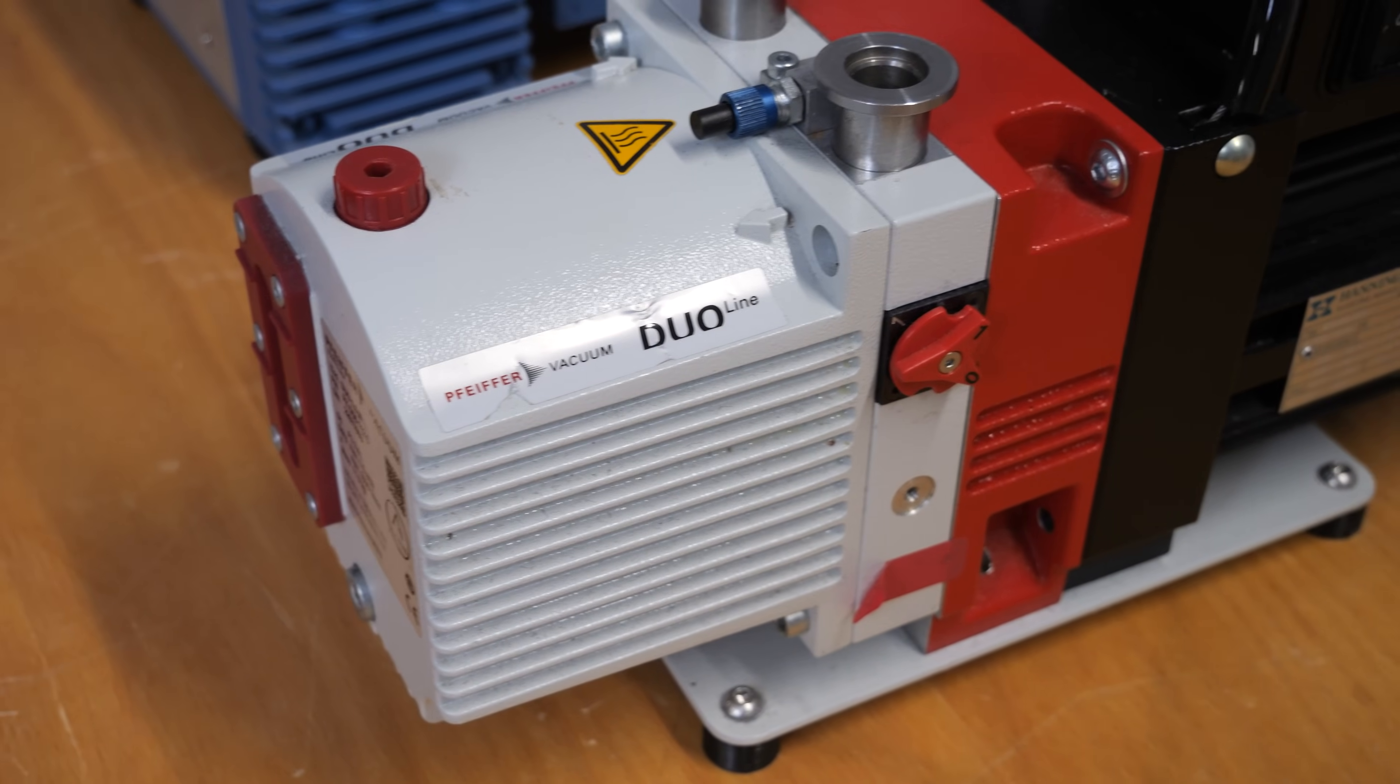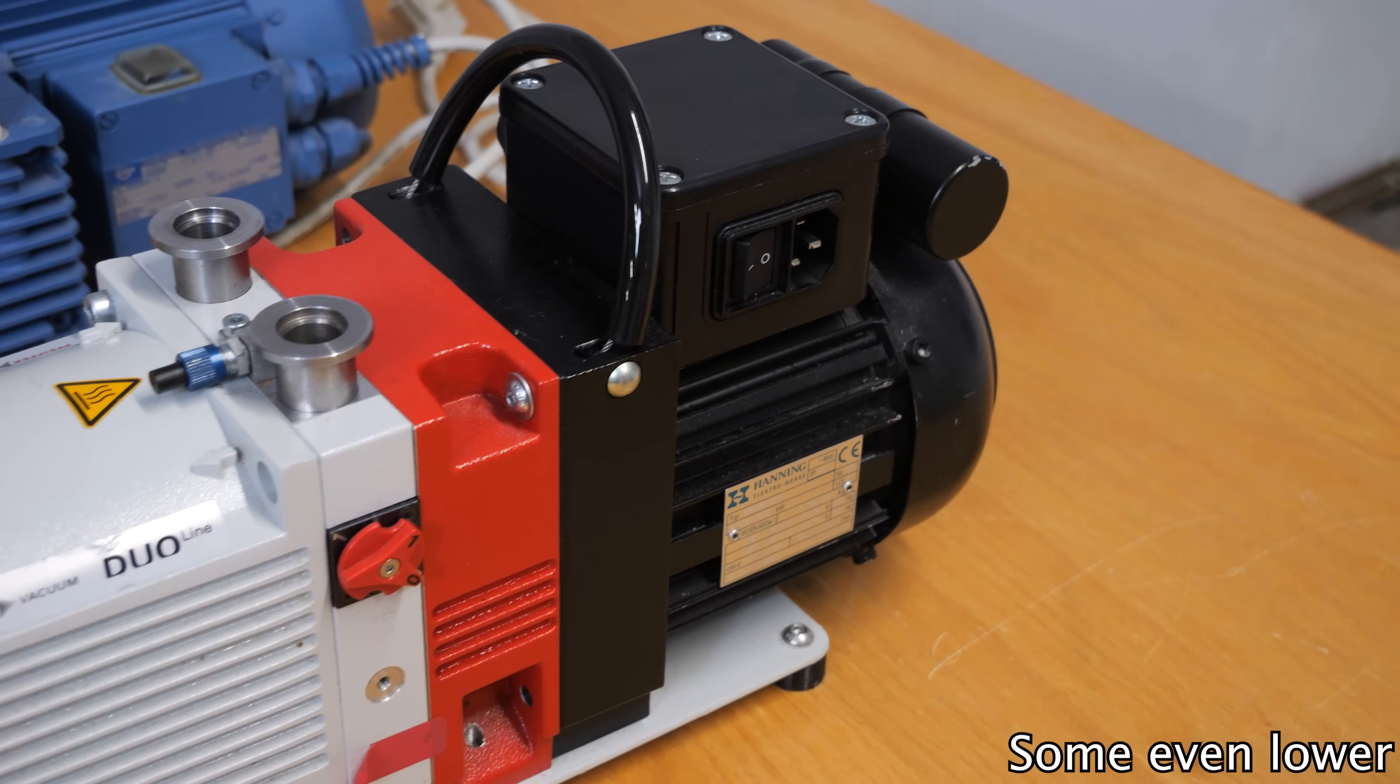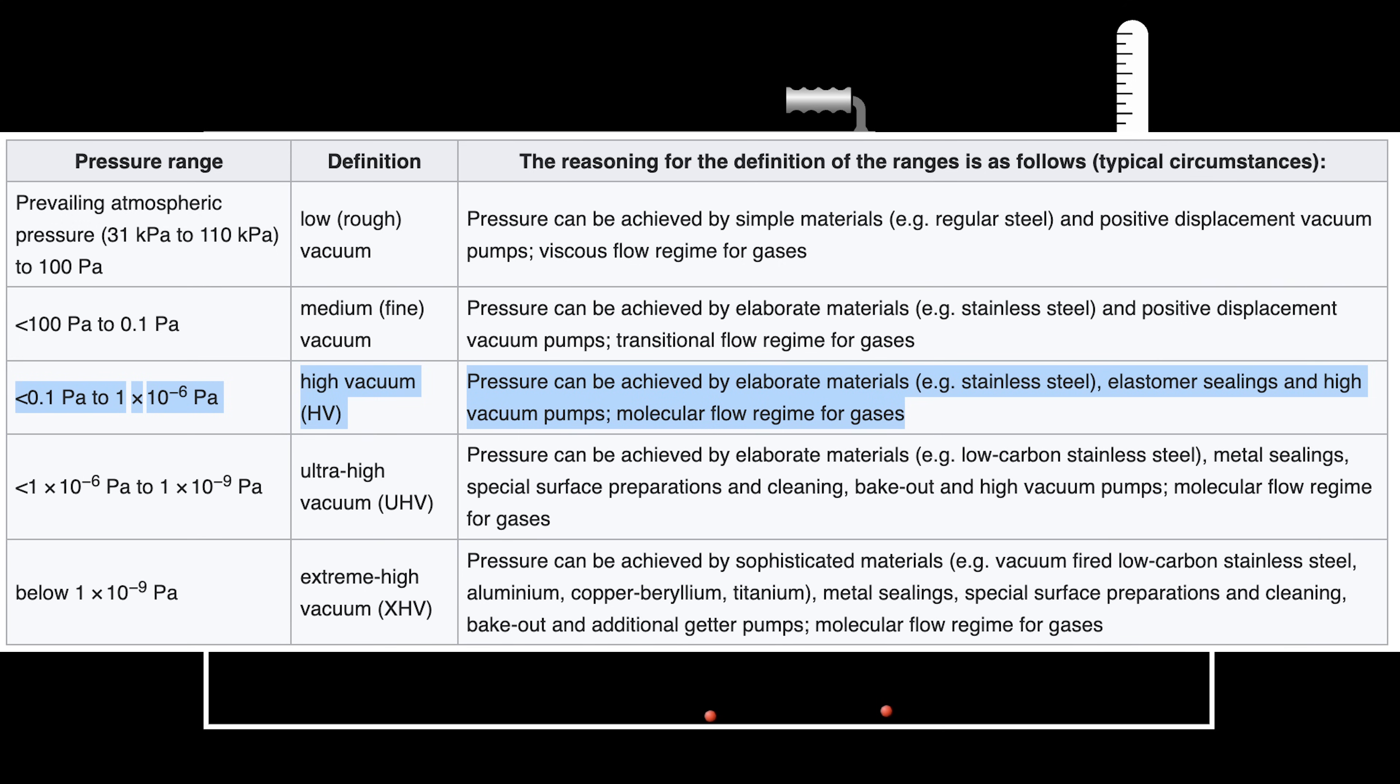Rotary vane pumps can achieve pressures as low as 10 to the power of minus 3 millibars. At this pressure, the mean free path is approximately 70 millimeters. However, at this point we encounter an issue. The gas particles are so far apart that there are practically no interactions between them. We have entered the realm of molecular flow, where the mean free path exceeds the volume of the chamber.